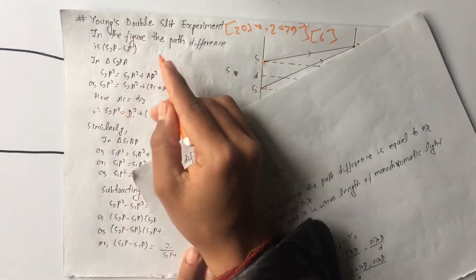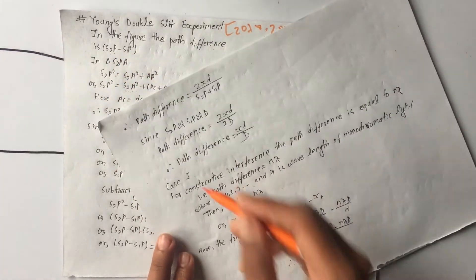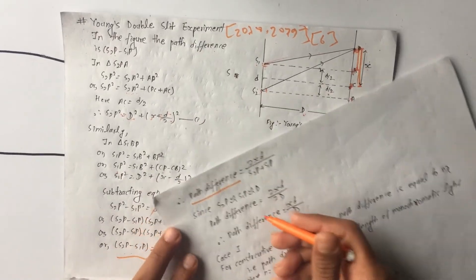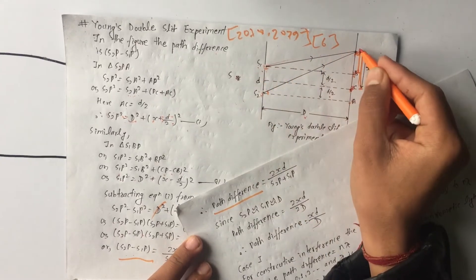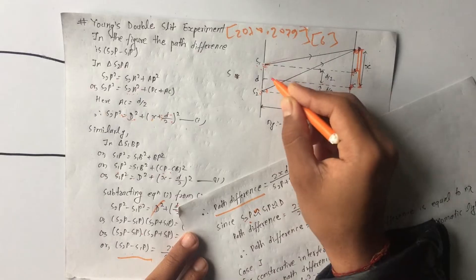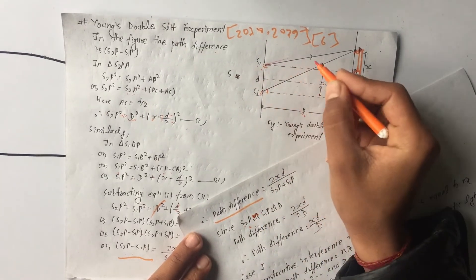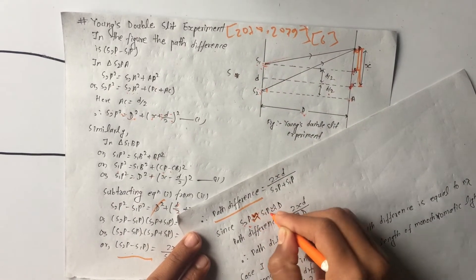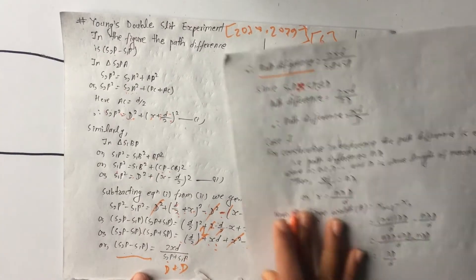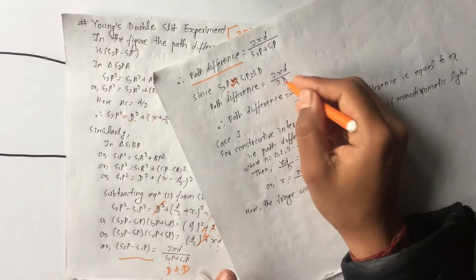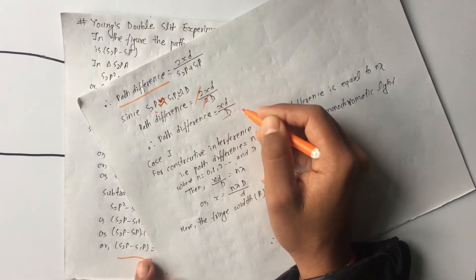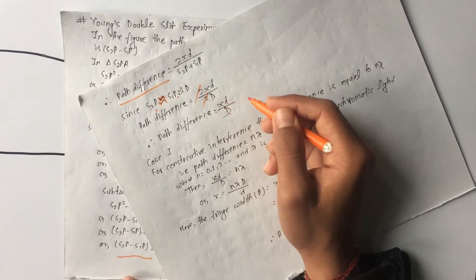From the figure, the path difference equals S2P minus S1P. Since S2P and S1P are approximately equal for large D, we can approximate S2P plus S1P as approximately 2D. Therefore, the path difference equals xd/D.